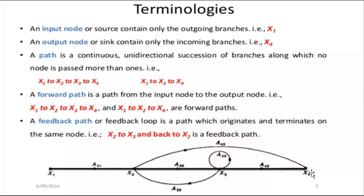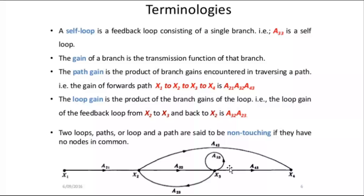No node is passed more than once. This example consists of two forward paths. A feedback loop is a closed path — for example, x2 to x3 then x3 back to x2. This is called a feedback loop. A self loop is also a feedback loop consisting of a single branch with gain a33. The gain of a branch is the transmission function of that branch.